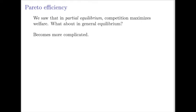In partial equilibrium, we've already talked about in the previous chapter that competition maximizes welfare. What we meant was that when we look at the competitive equilibrium, the allocation — the quantity produced — is such that the total welfare, which is the sum of producer and consumer surplus, is maximized. But this is a concept that really only makes sense when you're looking at just the one good. So how do we make the analogous statement when we look at general equilibrium?